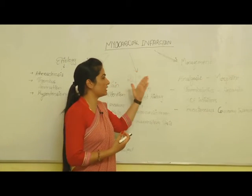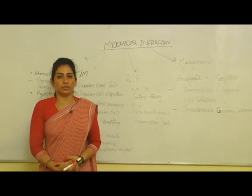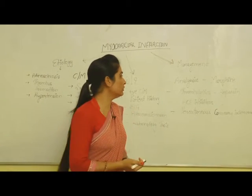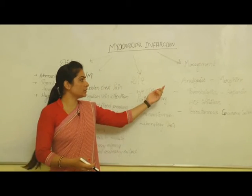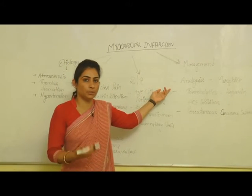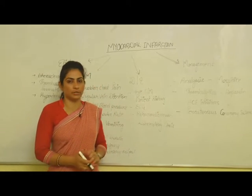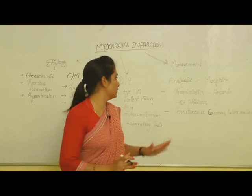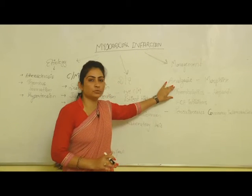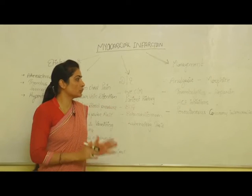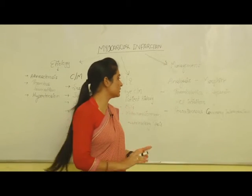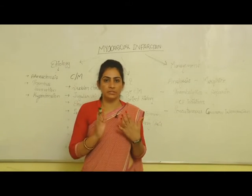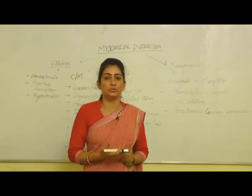Next, how to manage myocardial infarction? First of all, we have to relieve pain and anxiety. To relieve pain and anxiety, analgesic medications are provided to the patient, and the drug of choice is morphine sulphate. The second step is to dissolve the thrombolytic plaque — thrombolytics are used to dissolve the thrombus, and the drug of choice is heparin. Third, angiotensin converting enzyme inhibitors are used to decrease blood pressure and to increase urinary output.